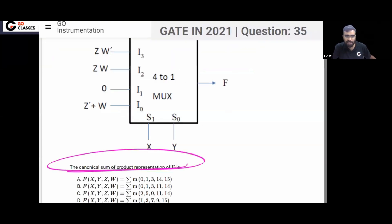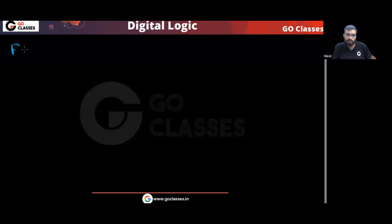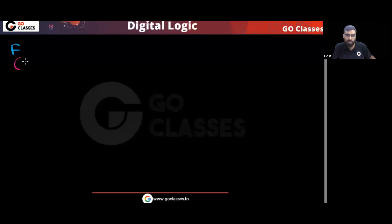The question asks for the canonical sum of products of this function f. We want to find the sum of minterms. The order of the variables in all the options is X, Y, Z, W — this is the order we will follow.